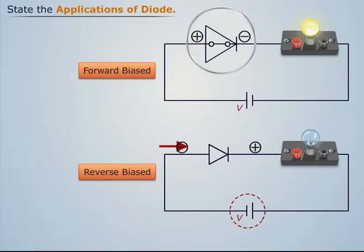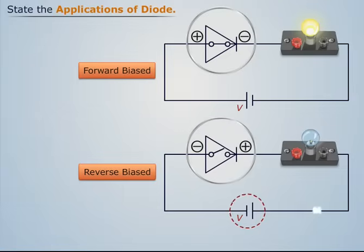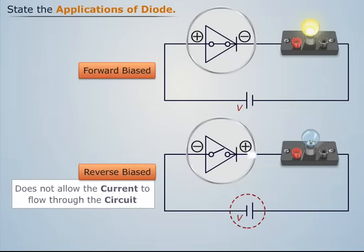When a diode is reverse biased, it behaves as an open switch and does not allow current to flow through the circuit. This difference in behavior when forward biased and reverse biased allows it to be used in various applications.